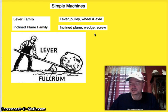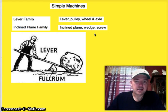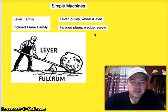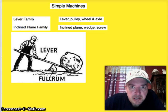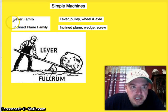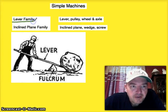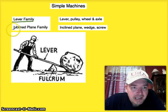These simple machines can be broken down into two families. One family is the lever family, and the other is the inclined plane family.